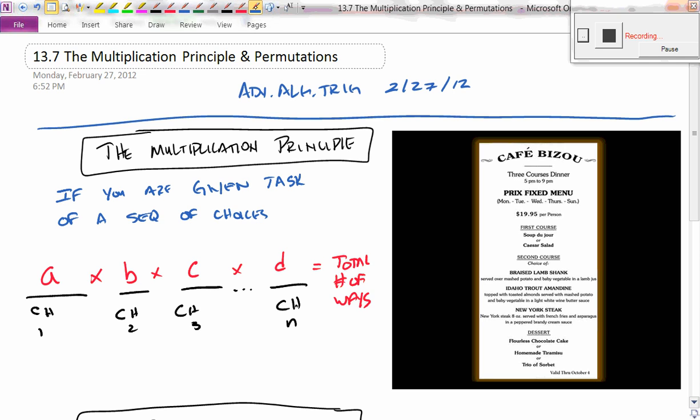So take a look at this example over here, this is the prefix menu example. Notice that on a prefix menu you've got two choices. For the first course you can pick the soup du jour or the Caesar salad. For the second choice, you have a few things that you can pick from. You can either pick the lamb, the trout, or the steak.